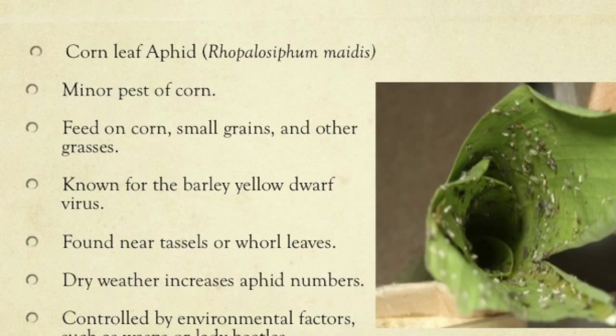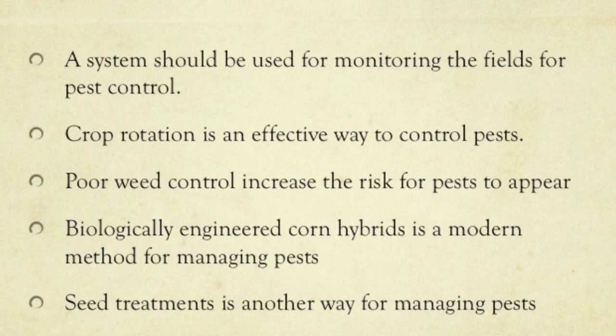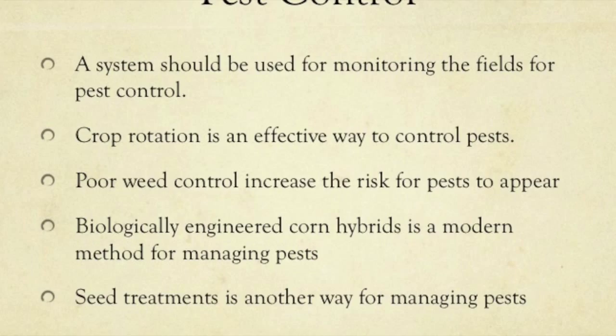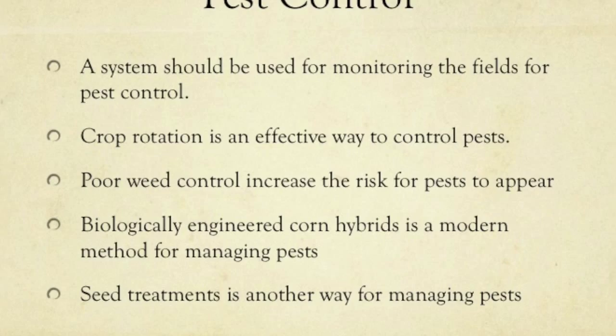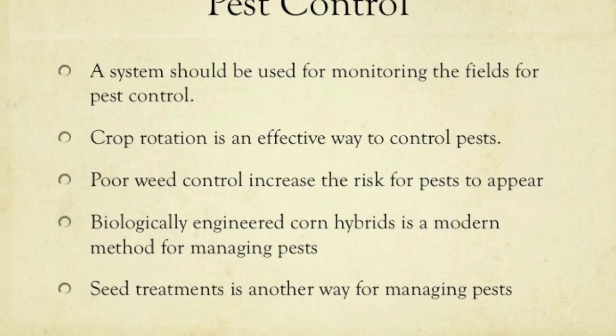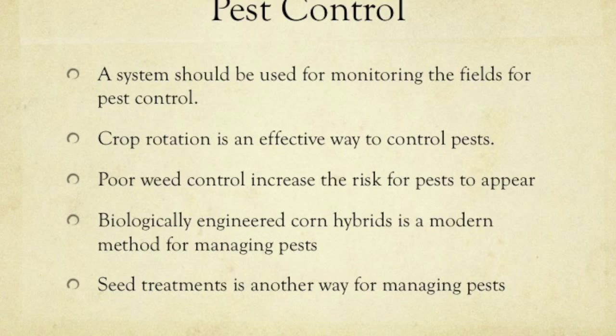For management of pests: since losses from insects may be high one year and of little consequence the next, growers use a system for monitoring fields and making control decisions. Crop rotation provides effective control of corn rootworms and helps reduce several other corn pests. Poor weed control increases the possibility for pests to appear, so removing weeds at least 2 weeks before planting reduces the possibility of these problems. Biologically engineered corn hybrids that produce an insecticidal toxin from the bacterium Bacillus thuringiensis provide a modern method for managing pests such as the European corn borer and some caterpillar species.